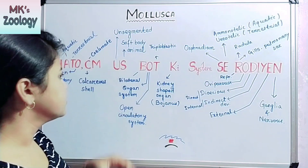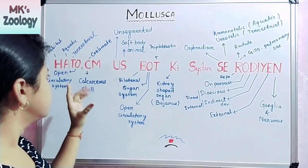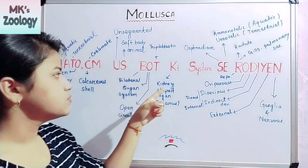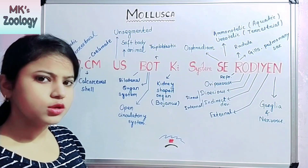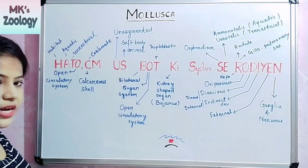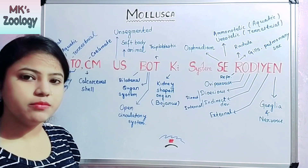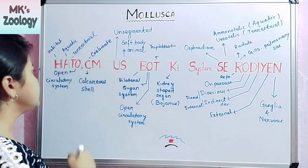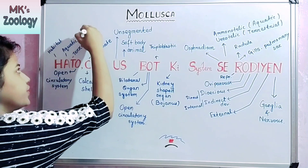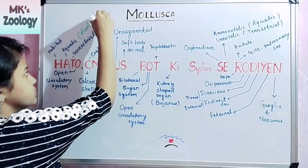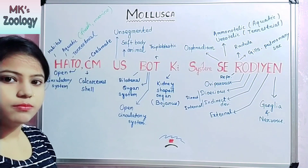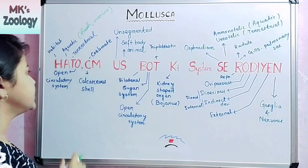So this is the trick. The first letter is H, which stands for habitat — meaning where the animals of Phylum Mollusca live. They live in aquatic habitat, which includes both freshwater and marine water. Then the next letter is T, which refers to terrestrial, meaning they also live on land.